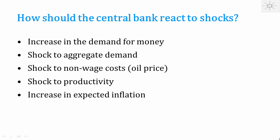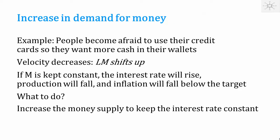We will discuss a shock to the demand for money, an aggregate demand shock, and an increase in expected inflation. Imagine a shock to the demand for money — suppose there is a lot of credit card fraud, so people become worried about using their credit cards and start to pay more with cash. That means they need more cash to make their payments, and therefore velocity decreases.